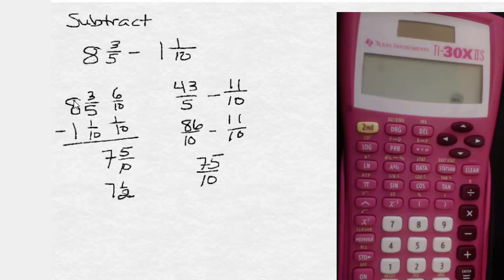which is the same as 7 and 5 tenths, dividing 10 into 75, 5 left over. And that is going to reduce to 7 and 1 half again.